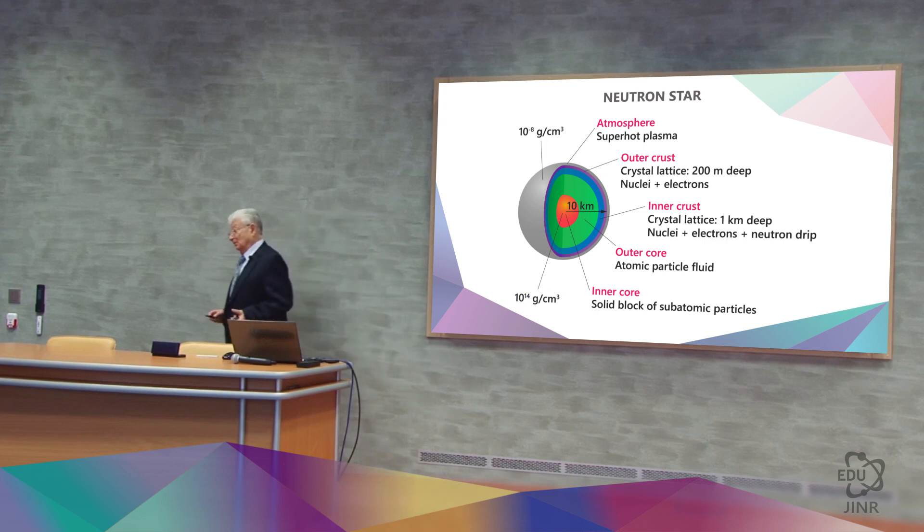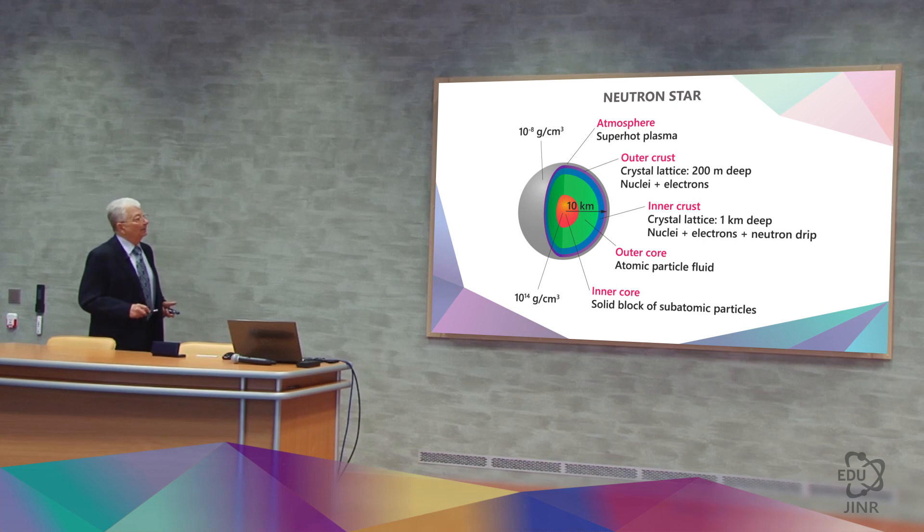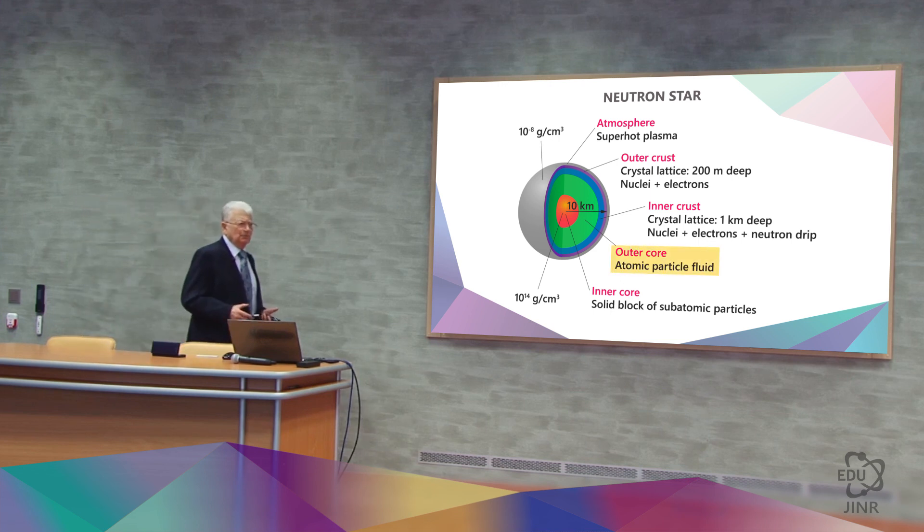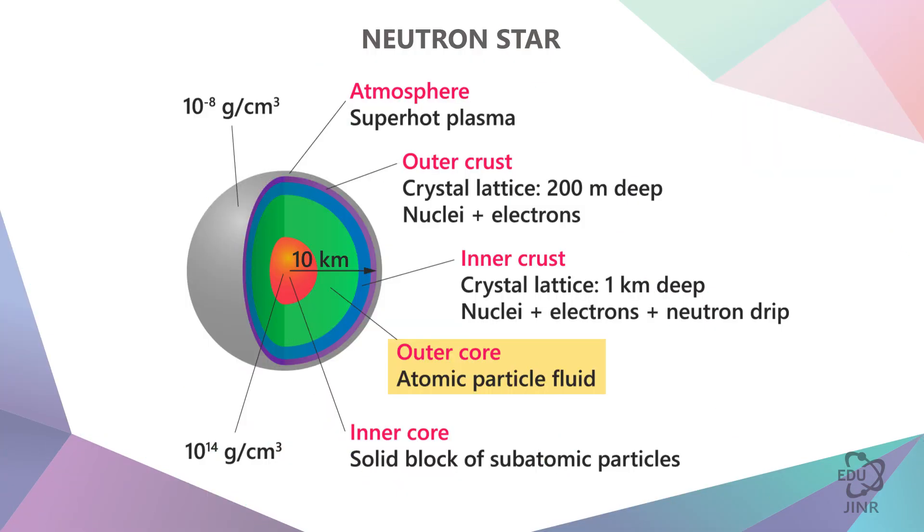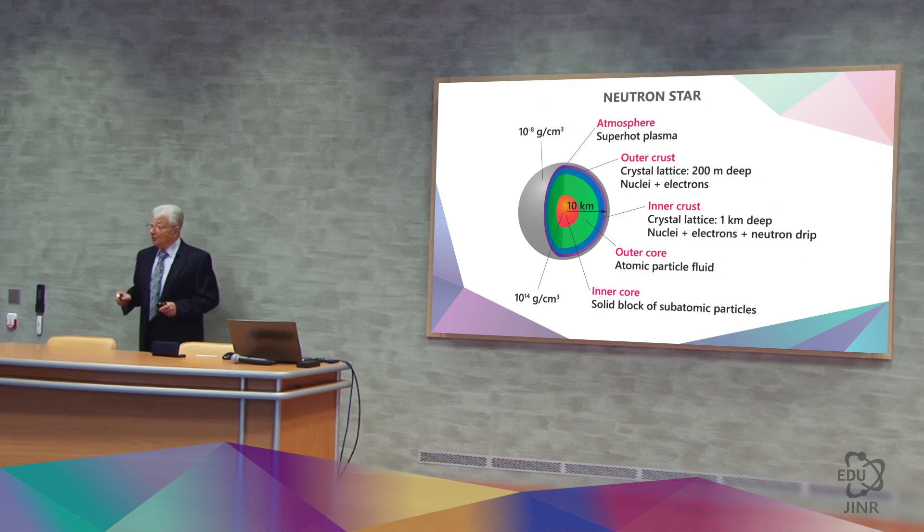The most interesting thing is that if we move from the surface to a depth of about 2 kilometers, we encounter an interesting soup-like substance consisting mainly of neutrons, fewer protons, electrons, and rather large nuclei with a mass of about 500 mass units. In this place, the density of matter is the same as nuclear density.